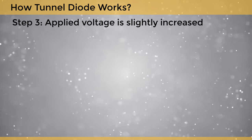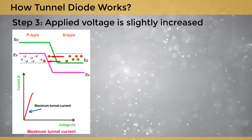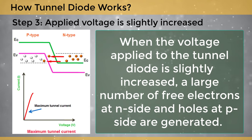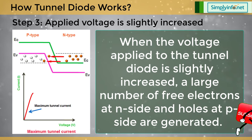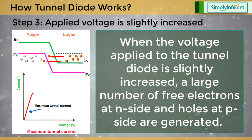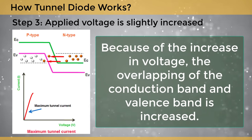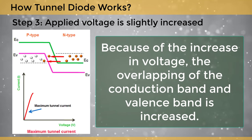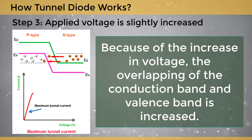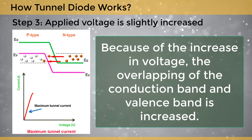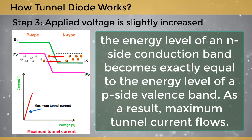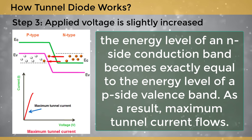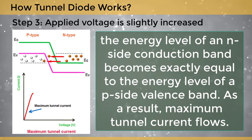Step 3: Applied voltage is slightly increased. When the voltage applied to the tunnel diode is slightly increased, a large number of free electrons at the n-side and holes at the p-side are generated. Because of the increase in voltage, the overlapping of the conduction band and valence band is increased. The energy level of the n-side conduction band becomes exactly equal to the energy level of the p-side valence band. As a result, maximum tunnel current flows.